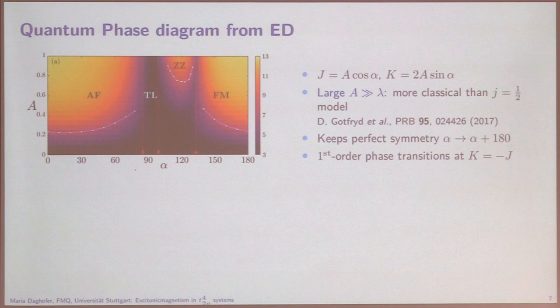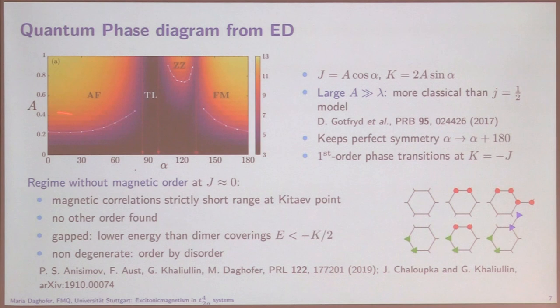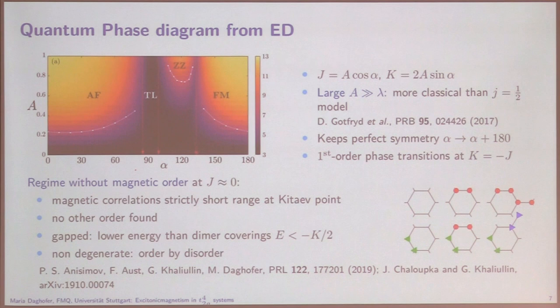We investigated this triplon liquid in more detail. We were able to do larger system sizes. Yeji and Guinea have since done analytical work that supports the conclusion that indeed there's a liquid. It almost certainly doesn't have any topological degeneracy, but it's still interesting. What I find striking is that it is really very similar to the J=1/2 Kitaev-Heisenberg limit, except that the liquid is a different liquid.